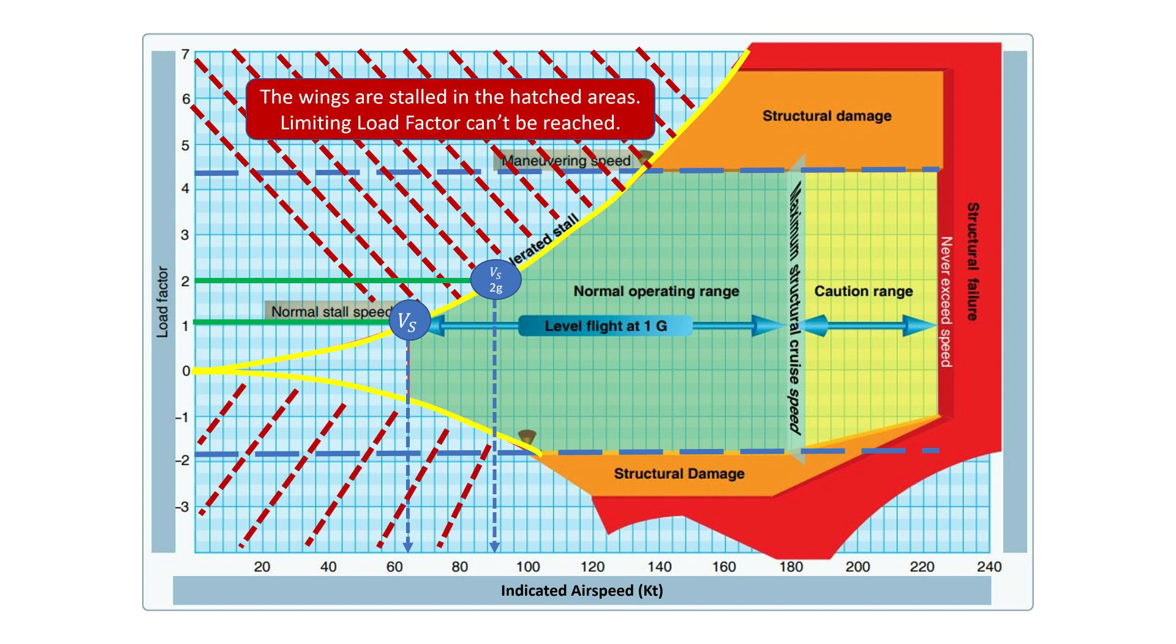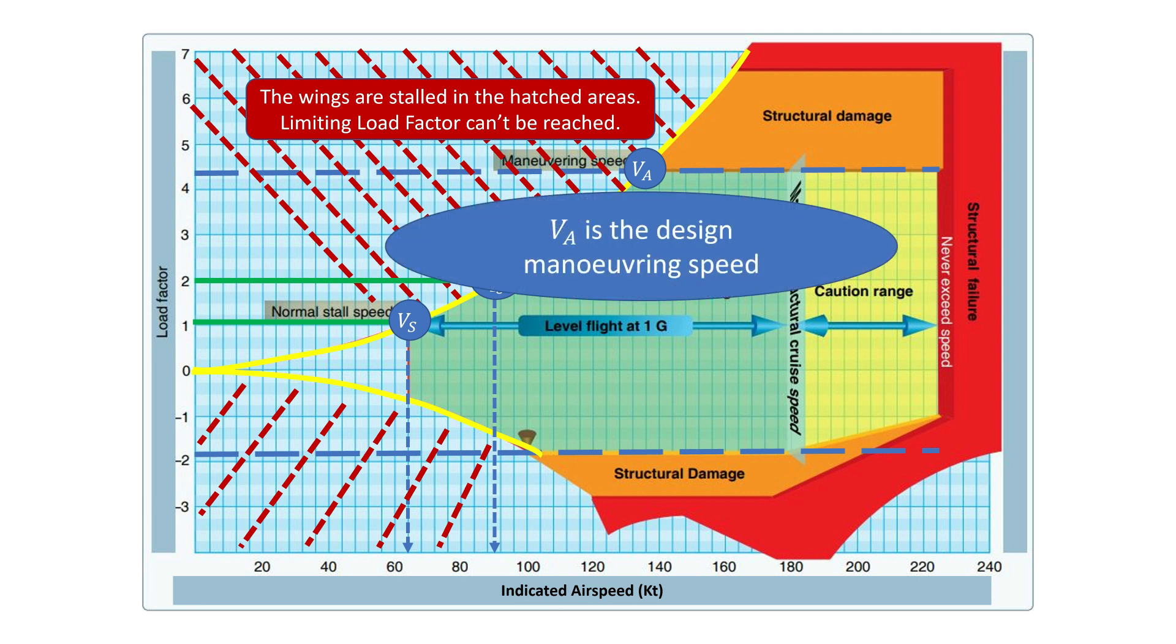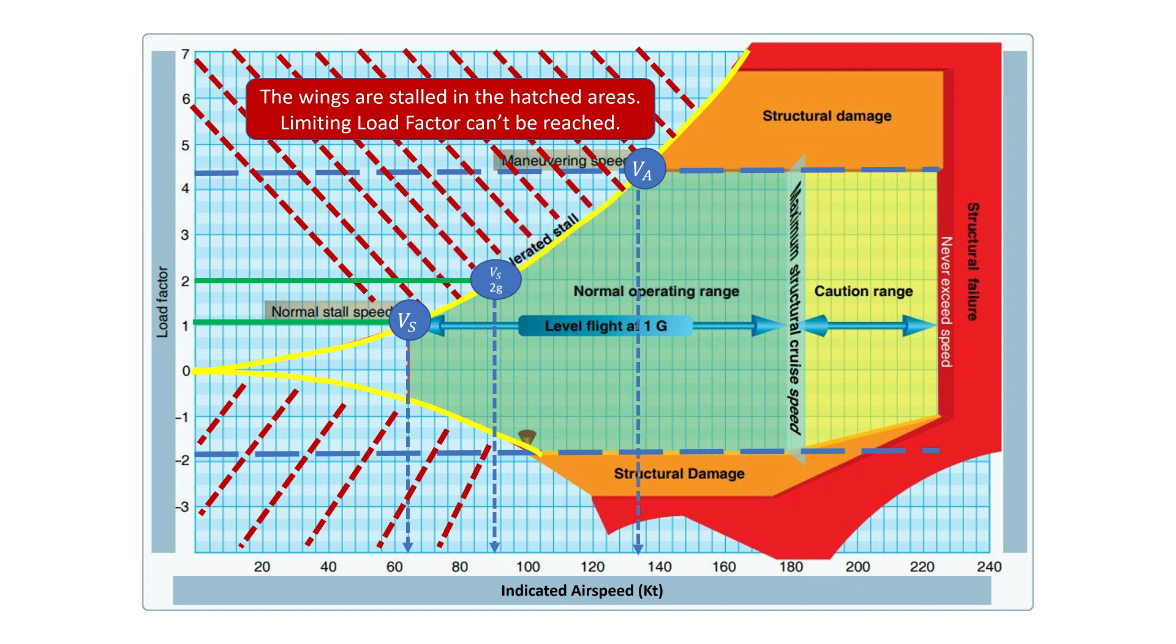The next very important point of interest is the intersection between the stall curve and the positive limiting load factor, called the design maneuvering speed VA, which in this example is 135 knots. The significance of VA is that it is the minimum airspeed at which the limiting load factor can be reached aerodynamically.